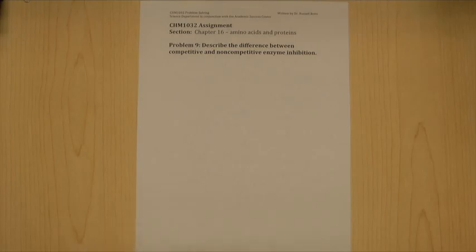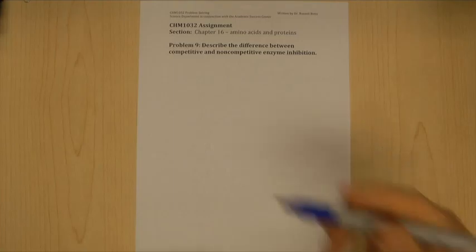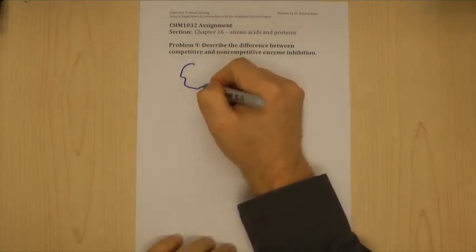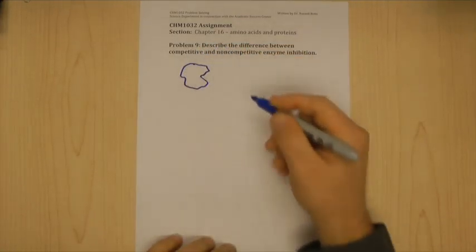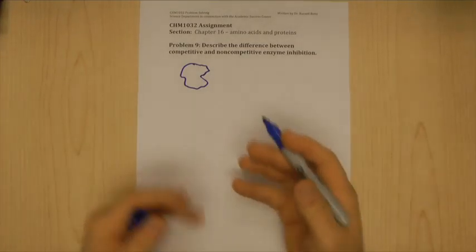When an enzyme works there is a location on the enzyme called the active site. Now if you want to you can think of an enzyme as this globular thing that we've just drawn there.